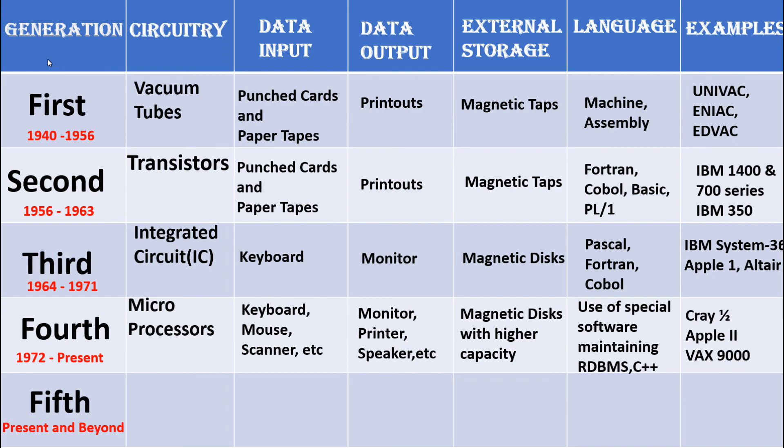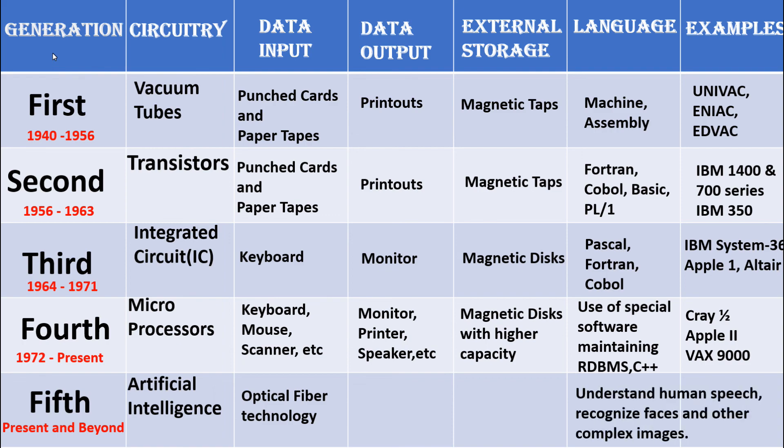The fifth generation of computers uses artificial intelligence. In this generation, optical fiber technology is used for data input. Systems can understand human speech and recognize faces and other complex images. Robotic technologies come under this fifth generation of computers.